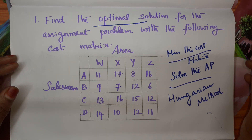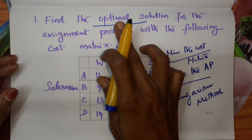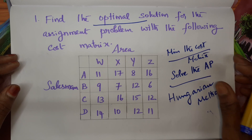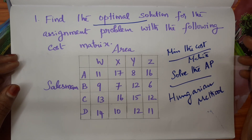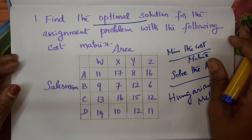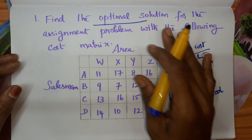So in your problem, if they are asking you to find the minimum, or solve, or find the optimal solution, we have to use the Hungarian method. If they are asking you to find the maximization of a given AP, the procedure we have to start with is different — I will teach you that in the next video. In this video, I am going to teach how to solve or find the optimal solution or find the minimum cost of the AP.